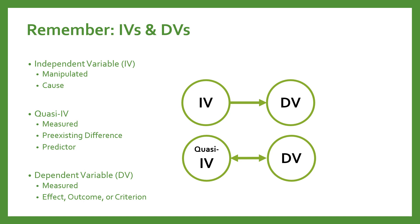Dependent variables are also measured. Those are the variables that depend on either the independent variable or the quasi-independent variable in the research. For example, if you were doing a study to see if interacting with faculty more often increases students' sense of belonging, you would have a quasi-independent variable and a dependent variable if you just measured that — if you just ask students how often they interact with faculty, that's a quasi-independent variable. You think it's a predictor of sense of belonging, but you didn't manipulate it.